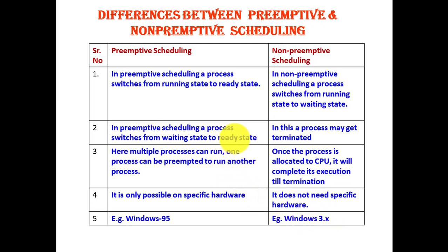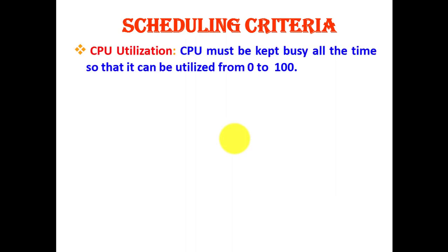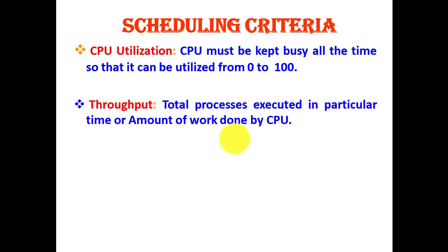Now let us discuss the scheduling criteria. The first criteria is CPU utilization — every system is designed so that the CPU should be fully utilized, from 0 to 100%. The second criteria is throughput, which means how many processes get executed in a particular amount of time. If more processes are executed, the system has higher throughput — another way to put it is the amount of work done by the CPU.